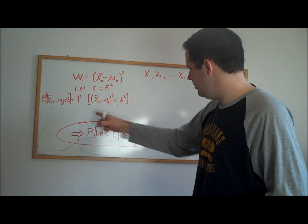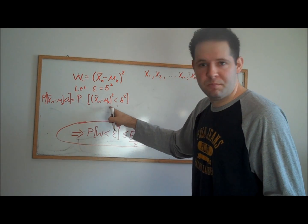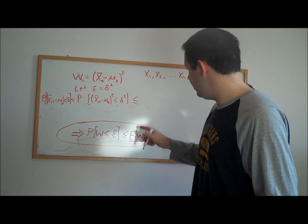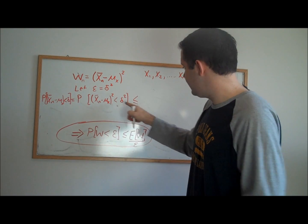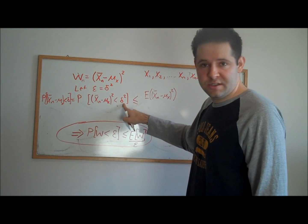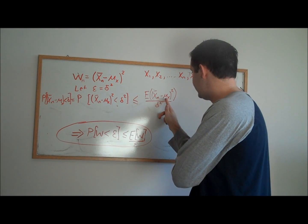Let's go ahead and use this result. x bar n minus mu squared is w. By the Chebyshev inequality, the numerator is going to be the expectation of what's on the left-hand side here. There's a denominator, which is what's on the right-hand side here.